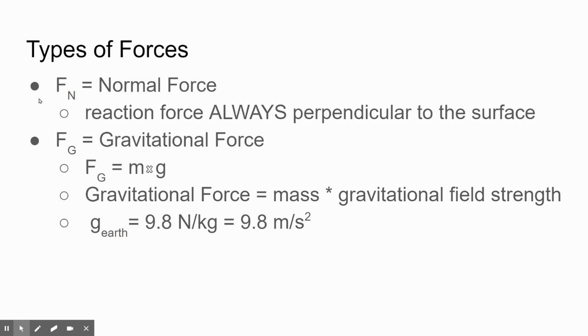You'll notice with each of these the F stays the same and it's just the little subscript that changes. So this little subscript N is for normal. G is for gravitational force. Here's the equation for gravitational force. Guess what? It's on your equation sheet.